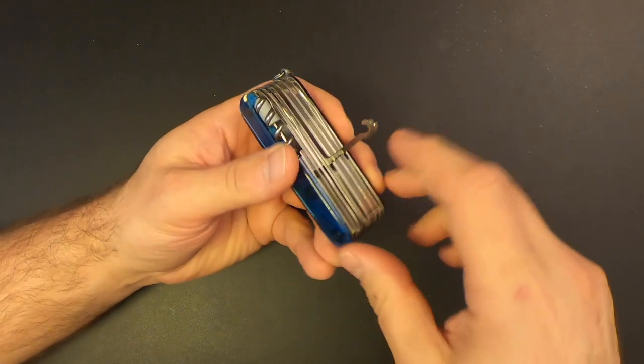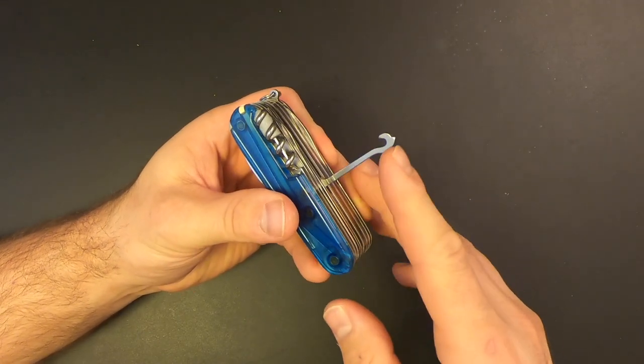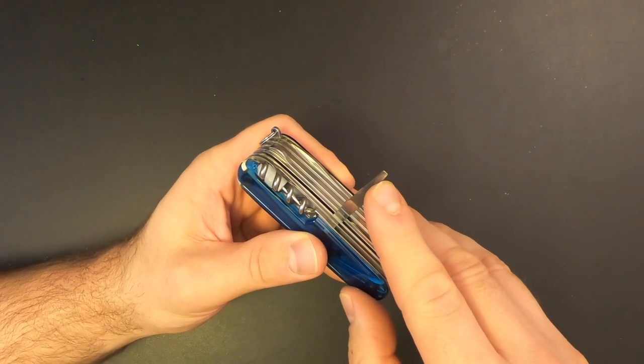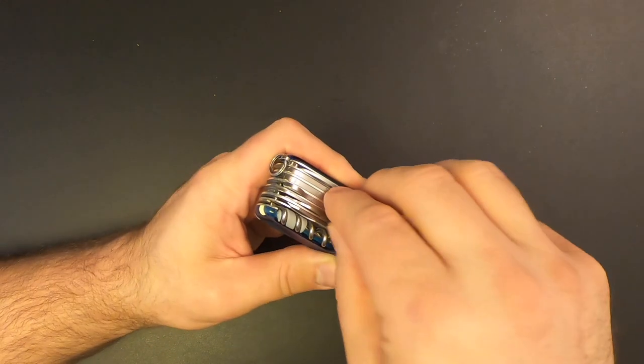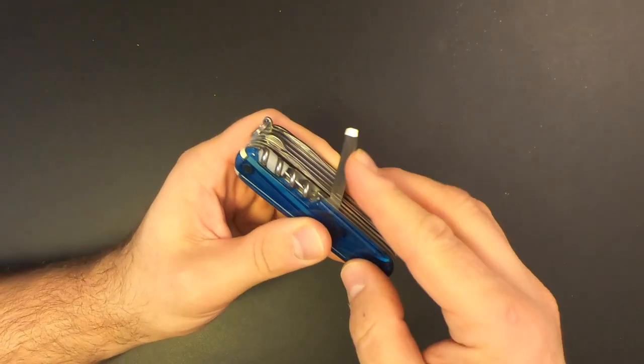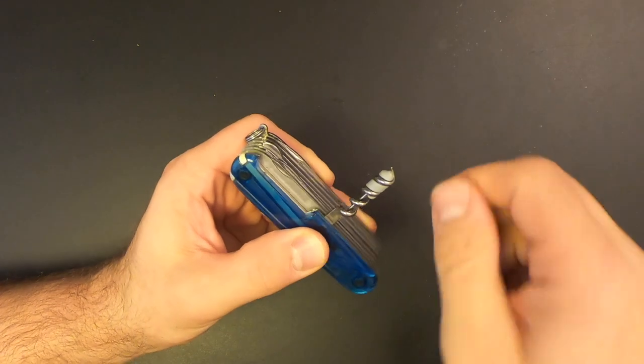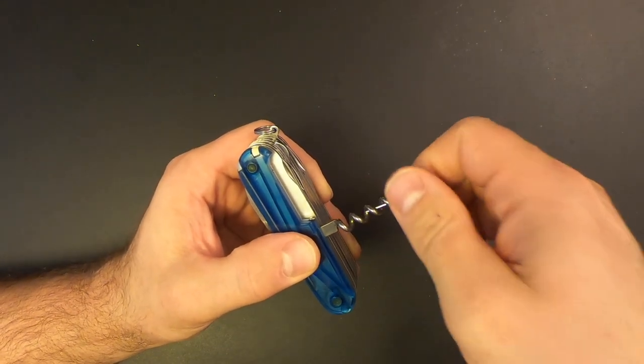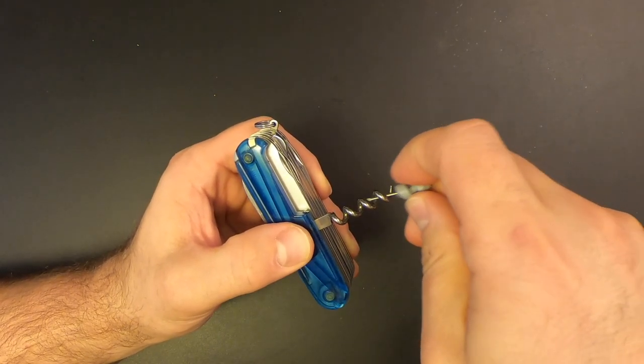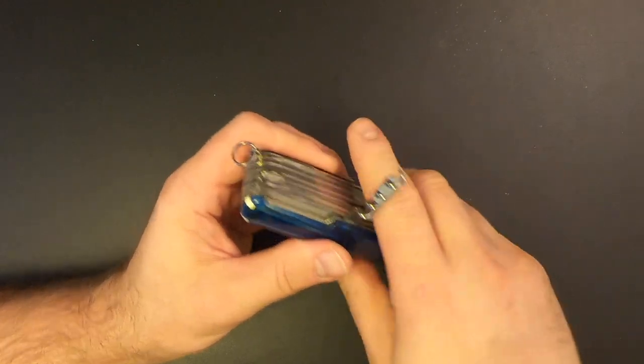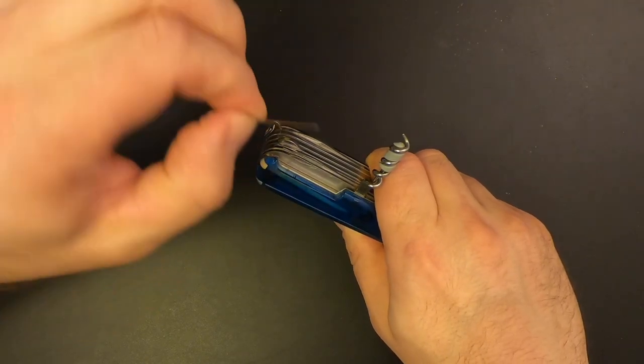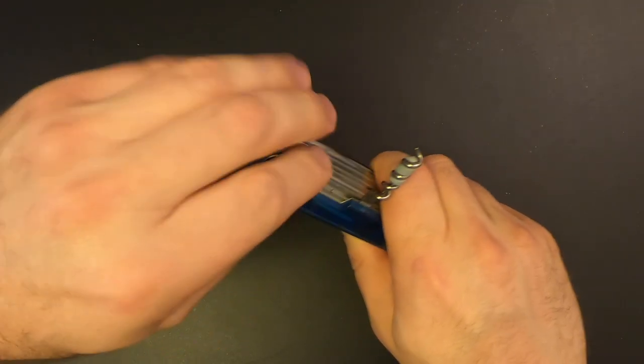Then we've got the multi-purpose hook or parcel hook. Kind of neat. Then we've got a small flat head screwdriver. And then we've got this little chisel tool. Kind of cool. And then we've got the corkscrew. And wrapped up in the corkscrew is a very small flat head screwdriver. I use that all the time. And then right here, there's a little needle. How cool is that? It fits right in there.